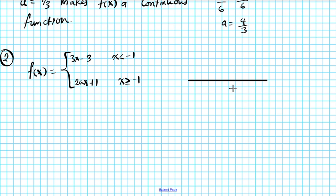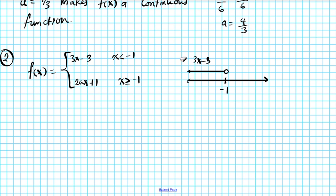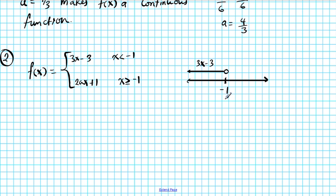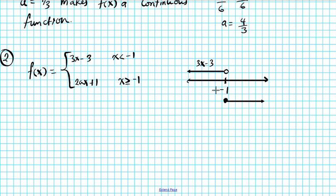Let's assume this is our x-axis. Where does the split happen? The split happens at negative 1, so we put negative 1 at the center. To the left-hand side, for values less than negative 1, we have the function 3x minus 3, excluding negative 1 with an open circle. And to the right side, including negative 1, we have the function 2ax plus 1.